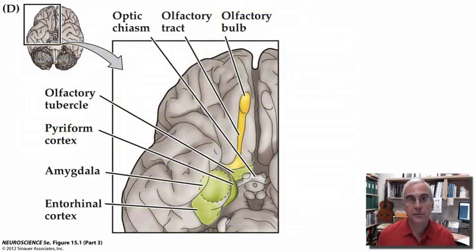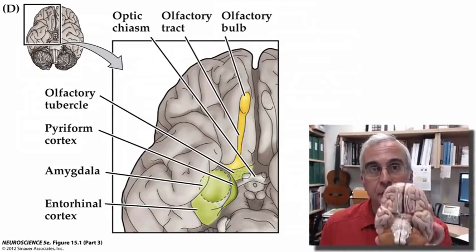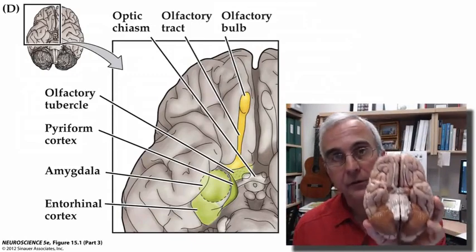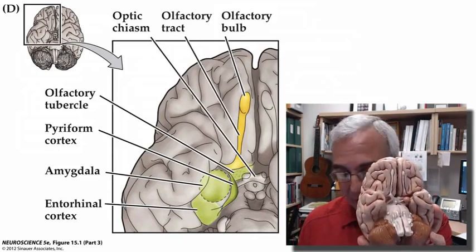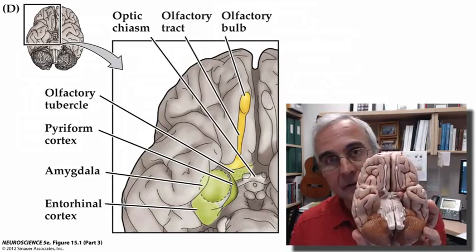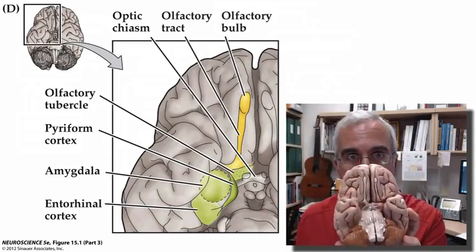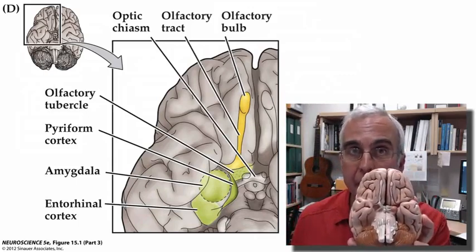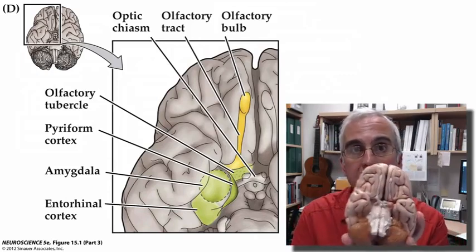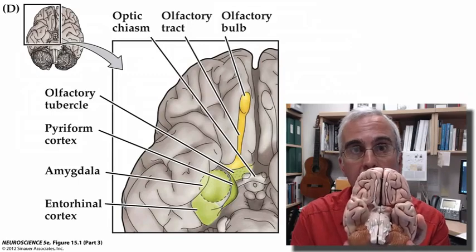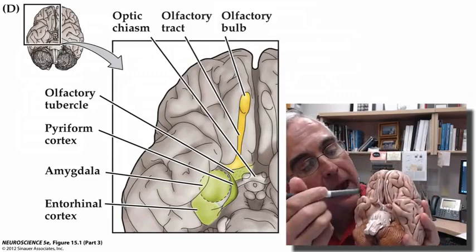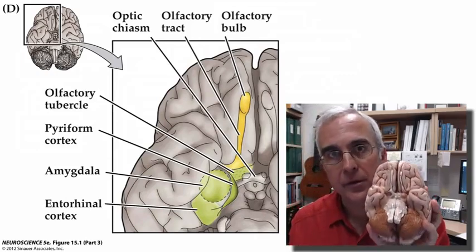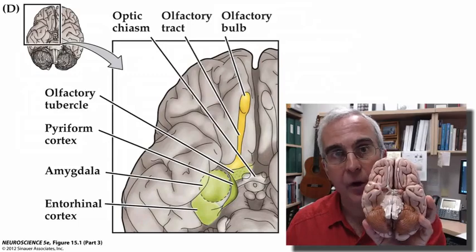Looking at these brain regions from an anatomical perspective using a brain model, you can recognize the olfactory bulb and the lateral olfactory tract connecting the olfactory bulb back to the olfactory cortex. Even in this brain model, as when looking at the actual human brain, it does look like a nerve — but the olfactory bulb is really part of the human brain. The lateral olfactory tract connects back to the inferior and posterior part of the frontal lobe, right near the junction of the frontal and temporal lobes — that's where we find the beginnings of our olfactory cortex.